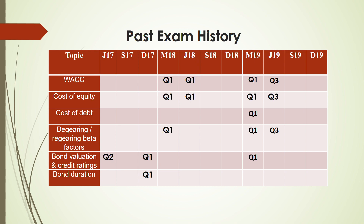This topic is very important. If you look at past exams, multiple questions came as Question Number 1 as a 50-mark question. WACC came three times as Question 1. Cost of equity also came, cost of debt, de-gearing and re-gearing beta factors — because we have to re-gear — and all these are linked to each other. To calculate WACC you have to calculate cost of equity and cost of debt, and to calculate cost of equity you have to de-gear and re-gear beta factors.